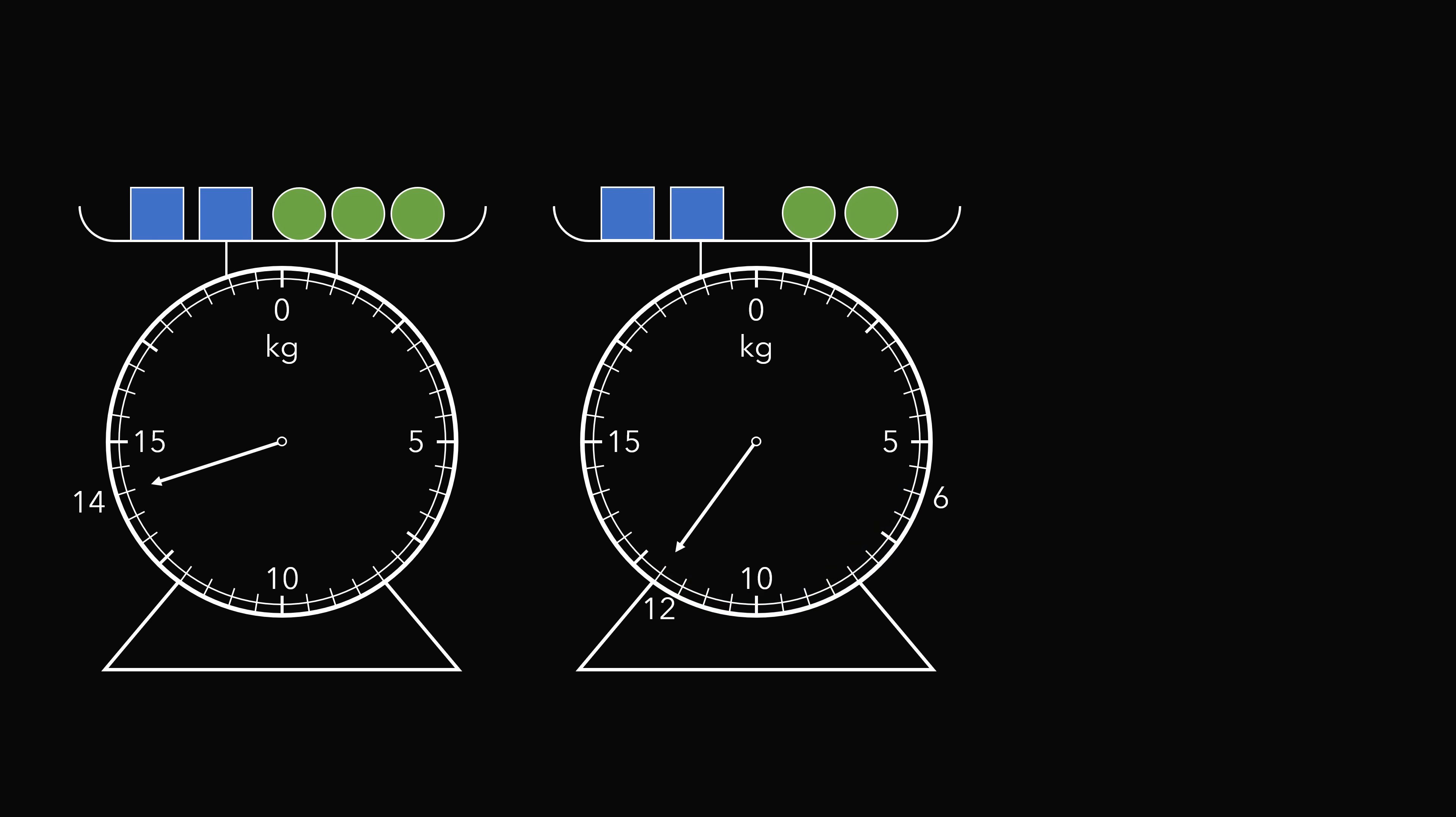In other words, in order to get to the weight of 14 kilograms on the left, we would need to add one circle to the scale on the right. This means the weight of a single circle equals 14 minus 12, and therefore the weight of a single circle equals 2 kilograms. And that's the answer!